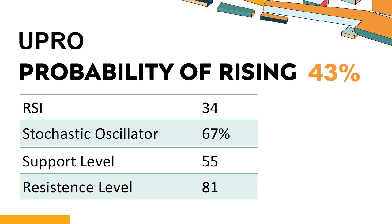What technical factors should you consider when analyzing UPRO? UPRO's 14-Day Relative Strength Index (RSI) value was 34. When the RSI is above 25 and below 50, it generally indicates that the stock is moderately bearish. This means that the security's price has been falling but has not yet reached oversold levels, typically considered an RSI reading of 25 or lower.